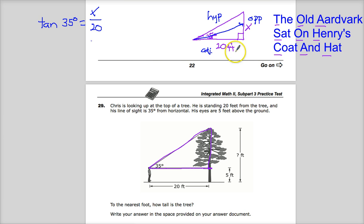People who don't set it up and don't think about what it means. To get rid of divide by 20, you do multiply by 20. So, in this case, it really works. X is equal to tangent 35 times 20.